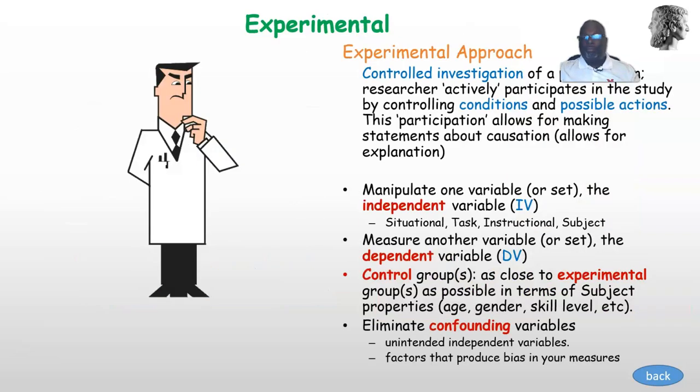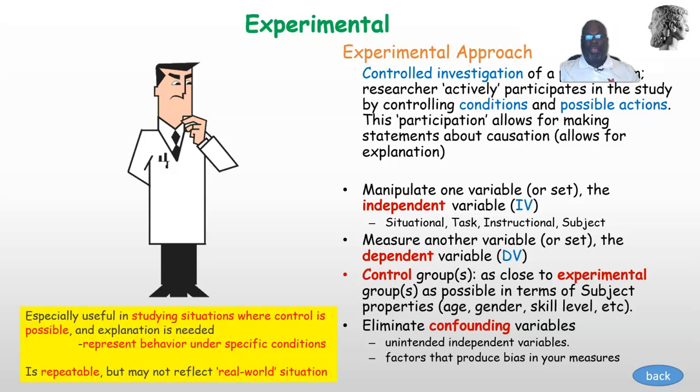So let's talk about that. The thing I want you to sort of take home is that this is the one type of design that allows you to talk about cause. It allows you to talk about why, and that's because you're controlling both the things that are happening and the characteristics of the people or sample that are in the study. That control on both sides gives you the ability to talk about cause in a way that you can't with the other designs.